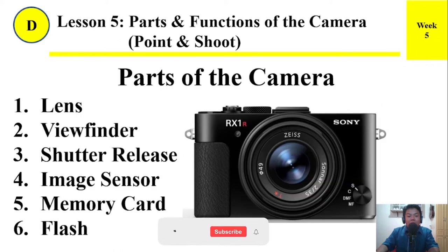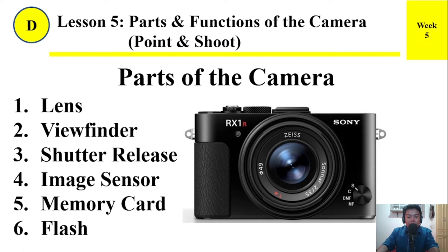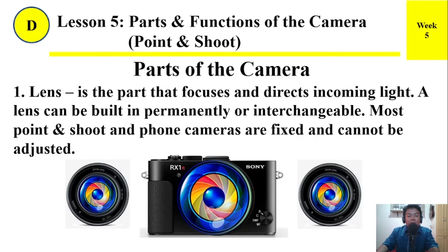Parts of the camera: 1. Lens, 2. Viewfinder, 3. Shutter release, 4. Image sensor, 5. Memory card, 6. Flash. Number 1: Lens. The lens is the part that focuses and directs incoming light. A lens can be built in permanently or be interchangeable. Most point and shoot and phone cameras have a fixed lens that cannot be adjusted.